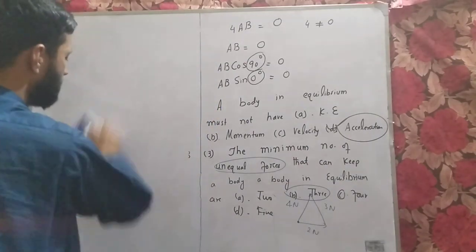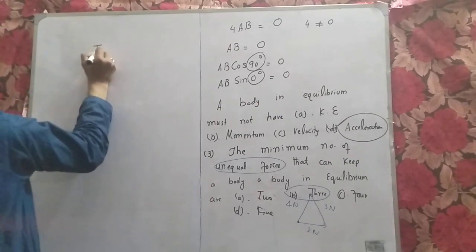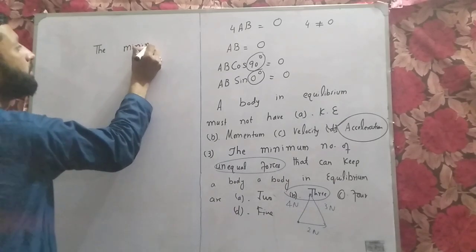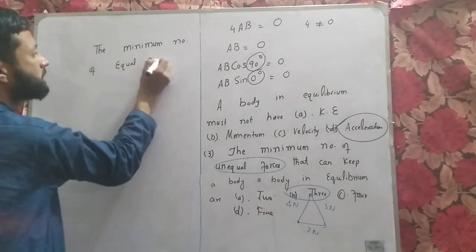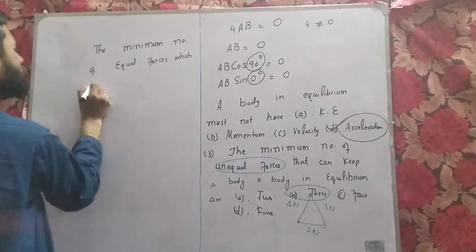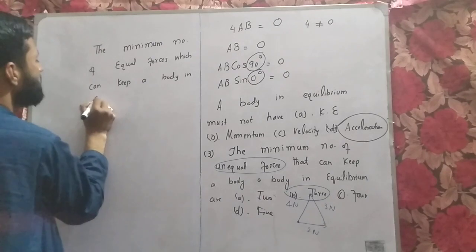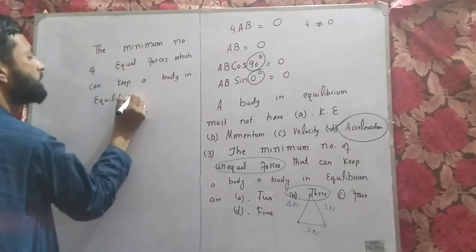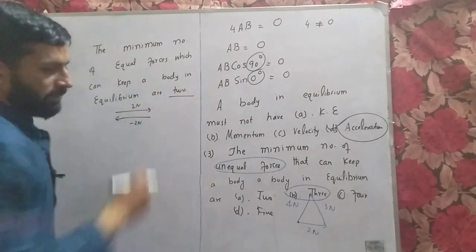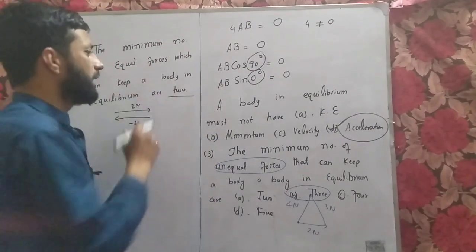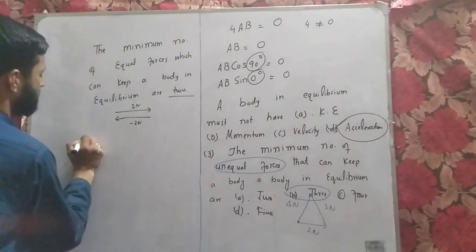The minimum number of unequal forces to keep a body in equilibrium is three. In contrast, the minimum number of equal forces to keep a body in equilibrium is two — for example, 2 N and −2 N — provided there is no rotation.